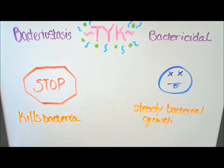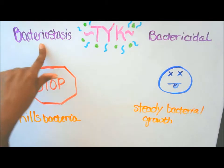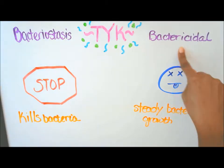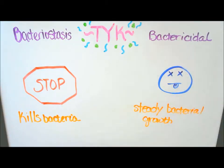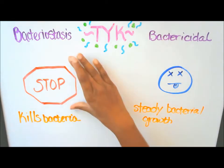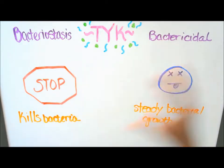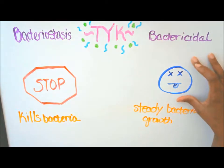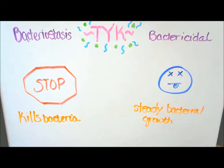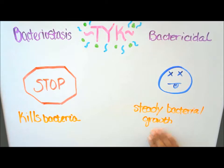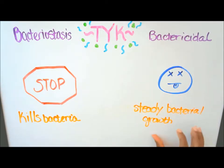Next we have bacteriostasis and bactericidal. The example for bactericidal is like death, and the example for bacteriostasis is a stop sign. Definitions: 'kills bacteria' matches bactericidal, and 'steady bacterial growth' matches bacteriostasis.